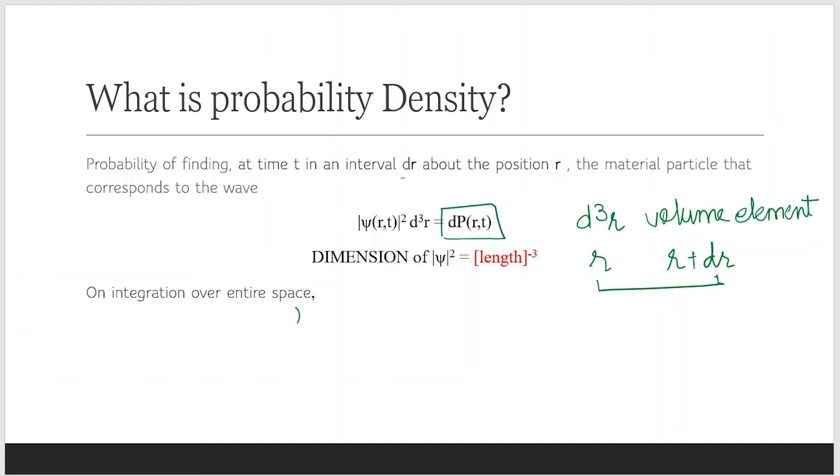If we integrate over all space this expression, we should get the probability. Total probability must be equal to 1. So we will be using this in the future. And now what is the dimension of ψ²? It is the length cubed.